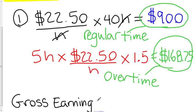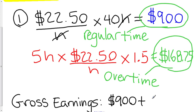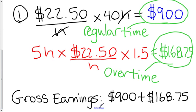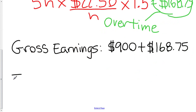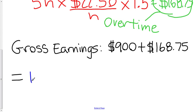So her gross earnings are $900 plus $168.75, which equals $1,068.75.